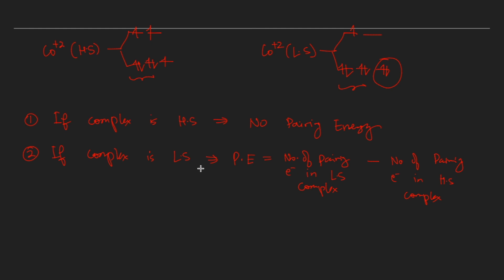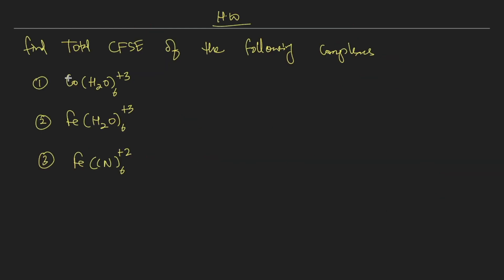I hope you understood the concept and where mistakes are made. As homework, find the total CFSE including pairing energy for: Co(H₂O)₆³⁺, Fe(H₂O)₆³⁺, and Fe(CN)₆²⁺. Comment your answers below and we will discuss them in the next part of the GATE Smart Question Series. Thank you so much for watching — see you in the next one, have a great day!